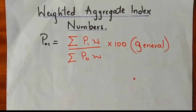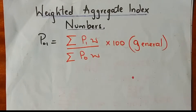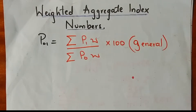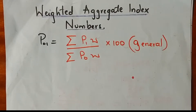Weighted aggregated index numbers differ from all other index numbers you've seen, which were unweighted. In unweighted index numbers, commodities are assumed to be of equal importance — a very strong assumption because in real life some commodities are of greater importance than others. For instance, you can have a highly priced commodity in your basket of goods but with low consumption. Weighted index numbers account for that.